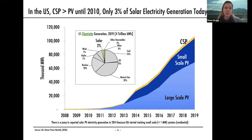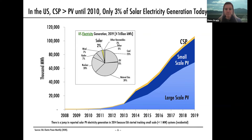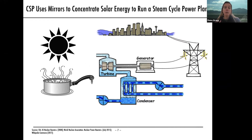Bringing it to the US, one of the two biggest markets for CSP: for a while, CSP was the only way we were producing electricity from solar and it was certainly larger than photovoltaics until about 2010, when photovoltaics just started to take off because they became more cost competitive than concentrating solar power. PVs have just taken off and CSP has grown very slowly, remaining a very small portion of electricity generation in the US.